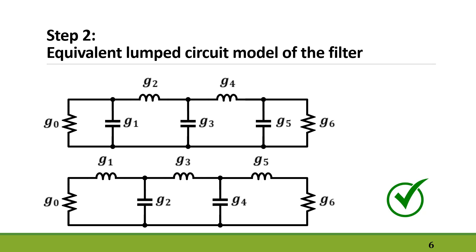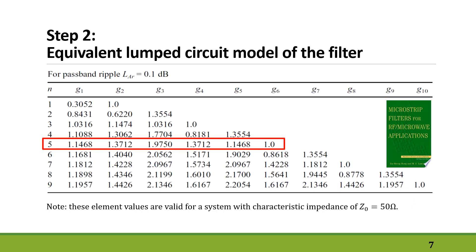A fifth order filter means that the total number of capacitors and inductors in the circuit equals 5. As you can see, there are two types of lumped element circuit models for Chebyshev filters and you can use either of them. If you consider both circuits at DC frequency, you can find a short-circuit path between input and output, and if you set the frequency to infinity this path is gone. Let's pick the second circuit.